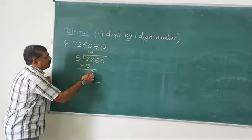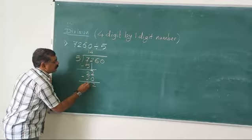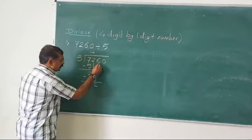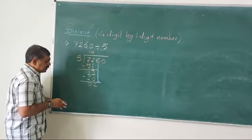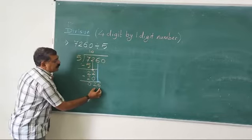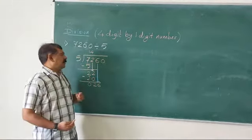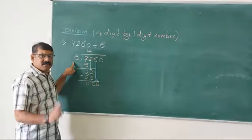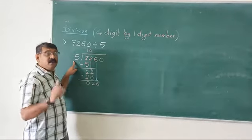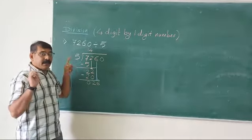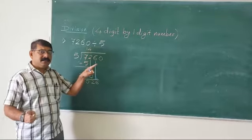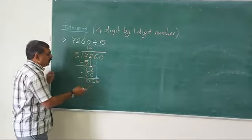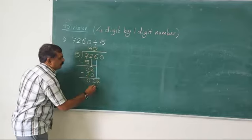Let us do the subtraction: 22 minus 20 gives 2 — here 2 minus 2 is 0. Take down the next digit, which is 6, so the number becomes 26. Again we divide 26 by 5: 5 ones are 5, 5 twos are 10, 5 threes are 15, 5 fours are 20, 5 fives are 25, 5 sixes are 30. 26 is between 25 and 30, so we cannot take 30 — we go one step back, 5 fives are 25. I write 5 here and it becomes 25.